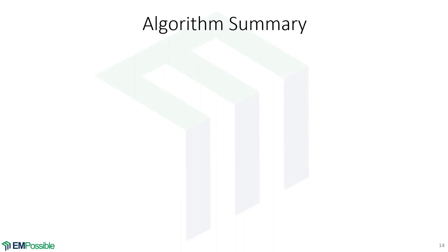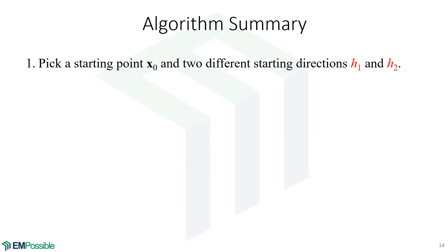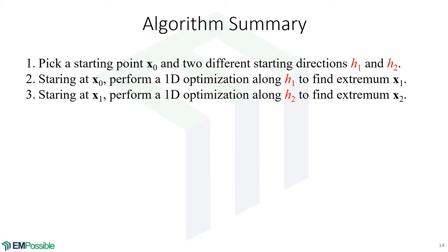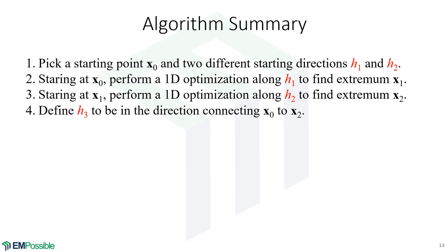Method summary: here is a step-by-step of what's happening in Powell's method. We pick a starting point hopefully close to the extrema, and we pick two starting directions — h1 and h2 must not be the same direction. Starting at x-naught, we perform a one-dimensional optimization along h1 to reach extrema x1. Then starting at x1, we perform a one-dimensional optimization along h2 to get to the next extremum x2.